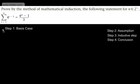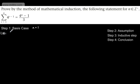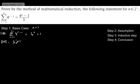Basis case: let n equal 1. On the left-hand side, the sum from r equals 1 to 1 of 4 to the power of r minus 1 equals 4 to the 0, which is 1. On the right-hand side, subbing in n equals 1 gives (4 to the power of 1 minus 1) over 3, which is 3 over 3, which is also 1. So shown true for n equals 1.